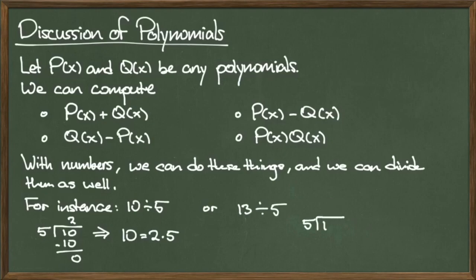Similarly, with 5 divided by 13, we see that 5 does not divide into 13 evenly so we get a remainder of 3 and a quotient of 2. In other words, 13 can be expressed as 2 times 5 plus the remainder 3. What we'll see is that polynomials behave this way as well.